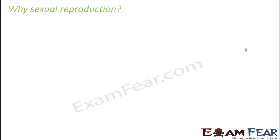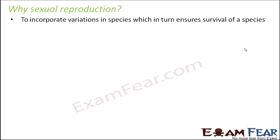Now the question is, when we already have asexual mode of reproduction, why do we need sexual reproduction? What are the advantages of sexual reproduction that were missing in asexual? As mentioned before, in asexual reproduction the daughters are exactly identical to the parent, so there is no variation. But variations are extremely useful for the survival of species, because variations are changes to adapt with the changing environment — changes for the better. So it actually helps organisms cope with unfavorable conditions, meaning variations are desirable. Sexual reproduction incorporates variation in species, which in turn helps the survival of a species.